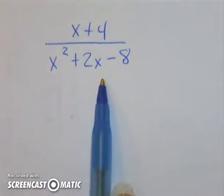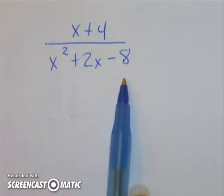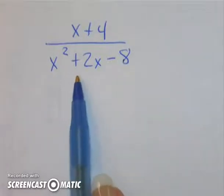So I need to think of two numbers that multiply to give me negative 8, but would add up to a positive 2.